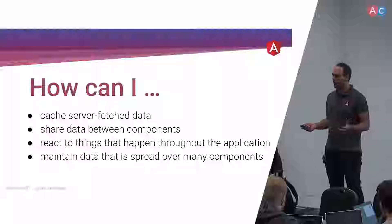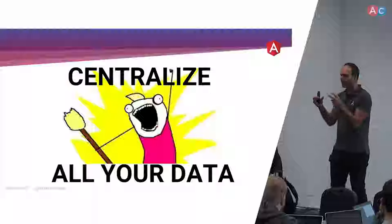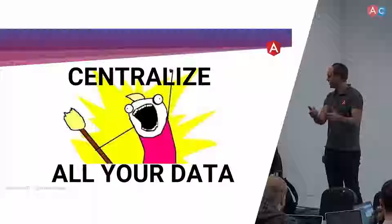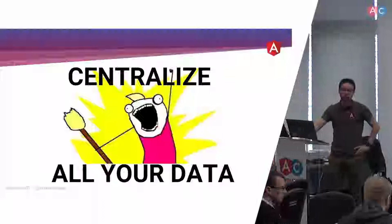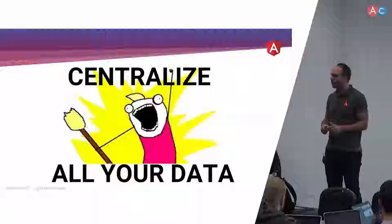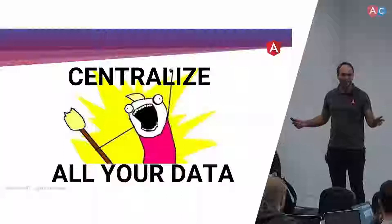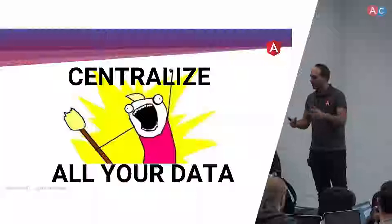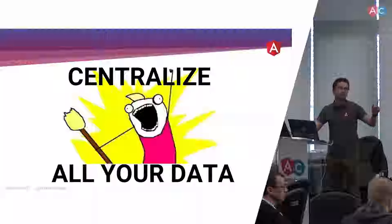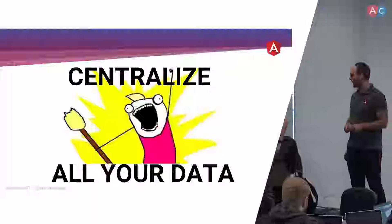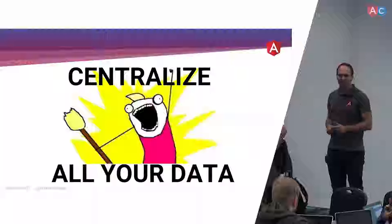One thing that comes to mind when talking about these problems is centralization — putting all the data and settings in one central place. The easiest approach is one central service with a simple object containing everything, which can become spaghetti code. As Mike Ryan mentioned yesterday, a BehaviorSubject with a plain object inside is perfectly fine for most use cases. A BehaviorSubject is a step toward the glory of state management, but when applications become bigger, it's really time to use a library.